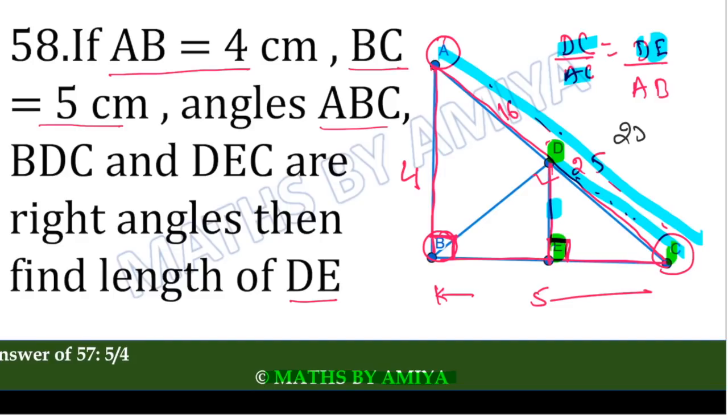By similarity, right angle within right angle, we have found this one is 25, DC is 25, AC complete is 41, DE we need to find but AB is 4. So from here we have a small calculation: DE is nothing but 100 by 41. This one is our answer.